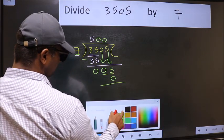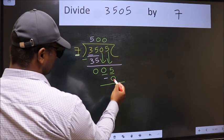So 7 into 0, 0. Now we should subtract. 5 minus 0, 5.